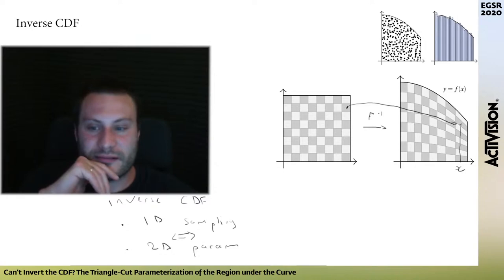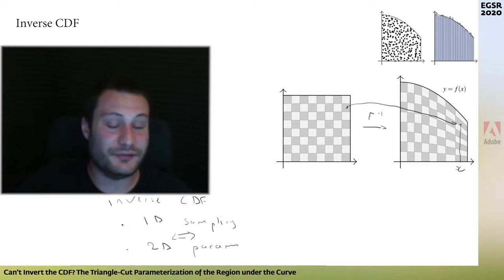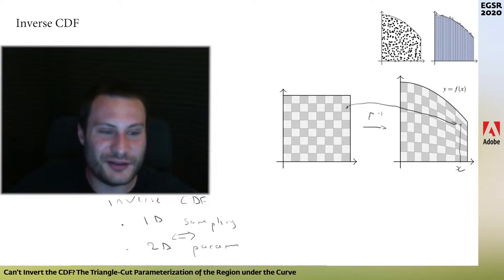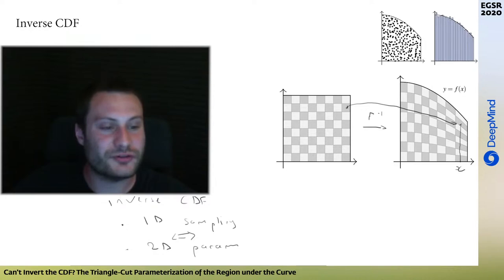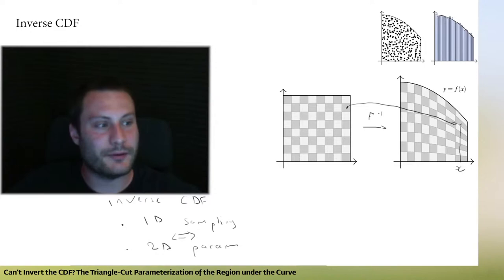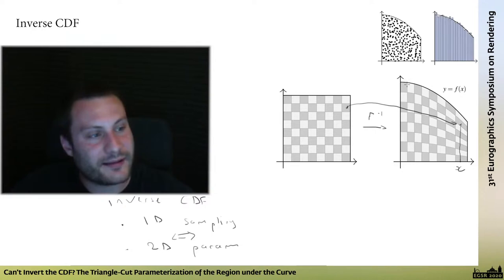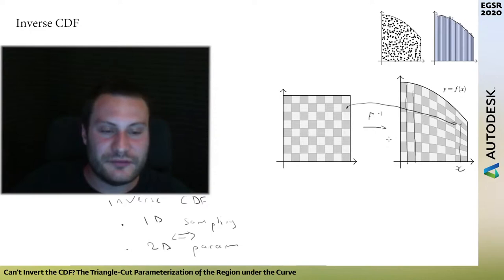Looking at this equivalence is an interesting insight. The reason we tend to get stuck with the inverse CDF is because we usually have the 1D view of the problem — if the solution is not analytic, there's not much you can do since you're stuck in 1D with few degrees of freedom. But when you look at it as a 2D parameterization, it brings new questions. For instance: is this the only area-preserving parameterization for the region under the curve? You can notice the inverse CDF parameterization is axis-aligned — the vertical lines are perfectly vertical.